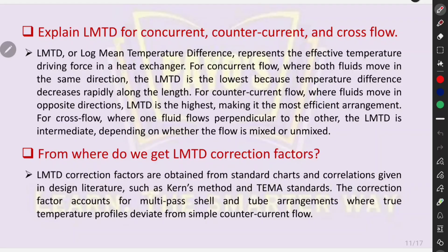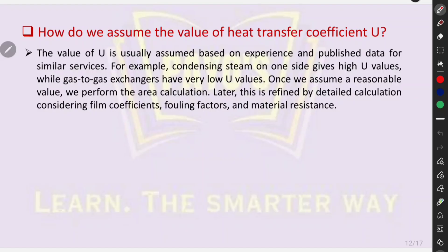From where do we get LMTD correction factors? LMTD correction factors are obtained from standard charts and correlations given in design literature, such as Kern's method and TEMA standards. The correction factor accounts for multipass shell and tube arrangements, where true temperature profiles deviate from simple counter-current flow. How do we assume the value of heat transfer coefficient U? The value of U is usually assumed based on experience and published data for similar services. For example, condensing steam on one side gives high U values, while gas-to-gas exchangers have very low U values. Once we assume a reasonable value, we perform the area calculation, which is later refined by detailed calculation considering film coefficients, fouling factors, and material resistance.